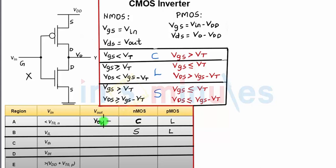In region B, when the input is low (at VIL, the maximum voltage considered logic zero), the NMOS operates in saturation and the PMOS operates in the linear region. The output is still logic high, but not exactly VDD — it's approximately equal to output high.